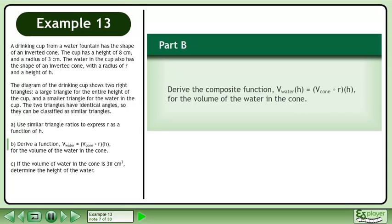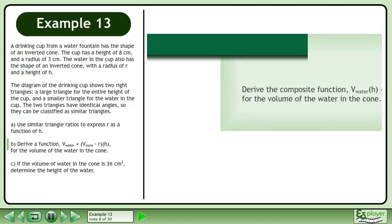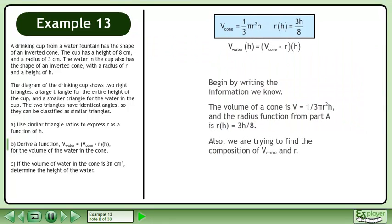In part B, we'll derive the composite function for the volume of the water in the cone. Begin by writing the information we know. The volume of a cone is v equals 1 over 3 pi r squared h and the radius function from part A is r equals 3h over 8.